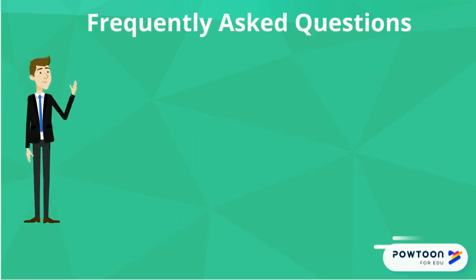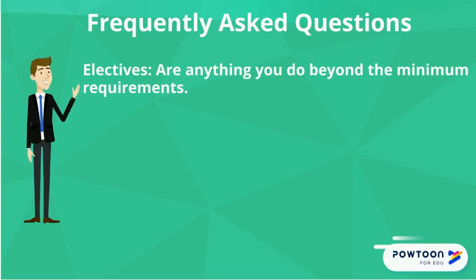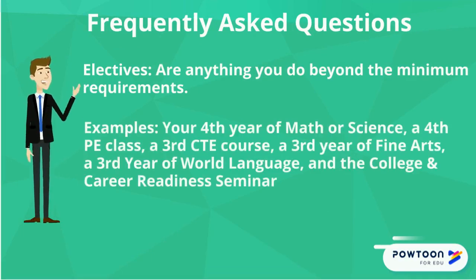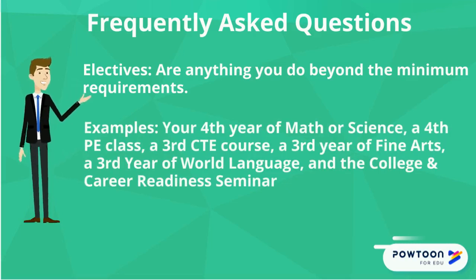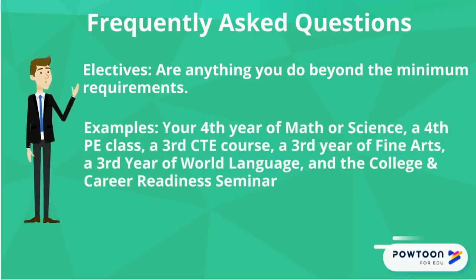Let's clear up some common areas of confusion. What are electives? Electives are anything you do beyond the minimum. This means your fourth year of math or science, a fourth PE class, a third CTE course, a third year of world language — these will all count as electives and help you meet this requirement.